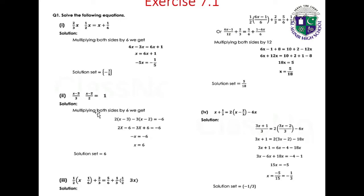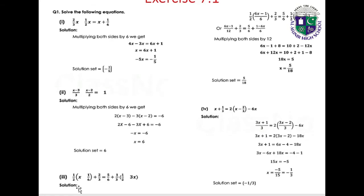Next part: (x minus 3)/3 minus (x minus 2)/2 equals 1. Multiplying both sides by 6 we get 2x minus 3 minus 3(x minus 2) equals minus 6, giving 2x minus 6 minus 3x plus 6 equals minus 6, so minus x equals minus 6, therefore x equals 6. Solution set: {6}.